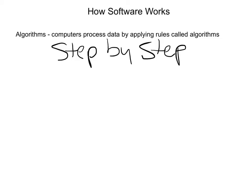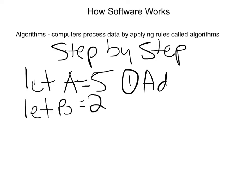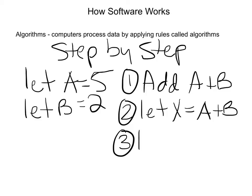So programs — if anybody takes a programming course — you're going to do things like this. Let A equal 5, let B equal 2. Your first step: add A plus B. Your second step: let X equal A plus B. Your third step: let Y equal X divided by 3. These are the algorithms — step-by-step. And remember, the ALU is the component that executes these instructions.